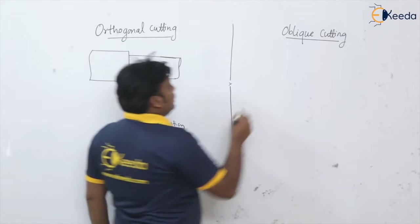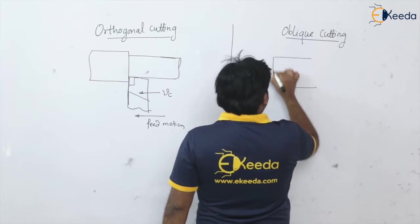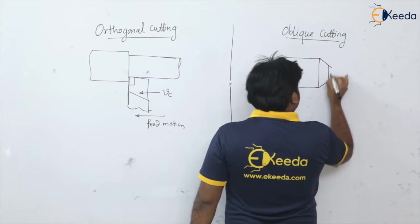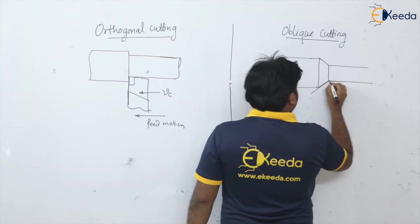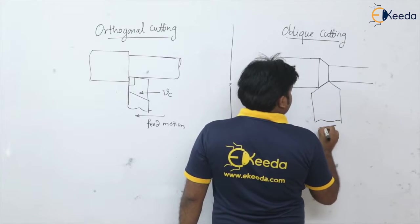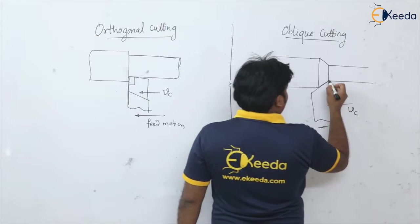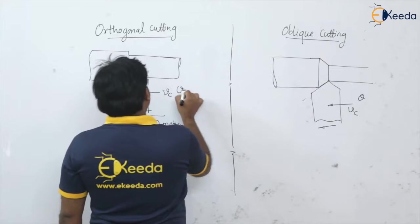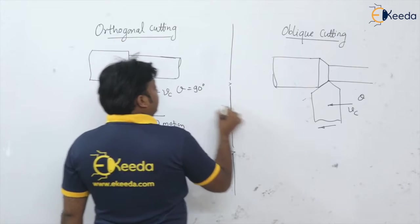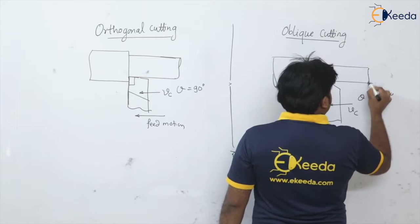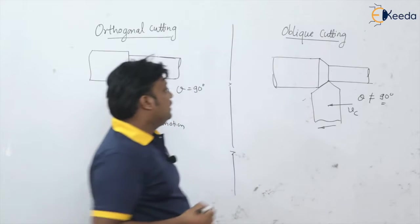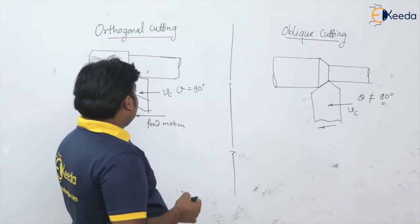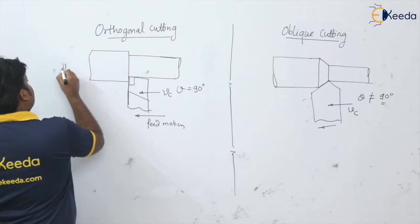In oblique cutting, the angle between the cutting edge of the tool and the cutting velocity vector Vc is other than 90 degrees. Here the cutting edge of the tool makes an angle theta with Vc, and this angle theta is not equal to 90 degrees. That is the basic difference between orthogonal cutting operation and oblique cutting operation.